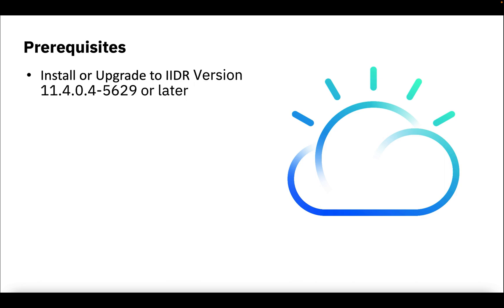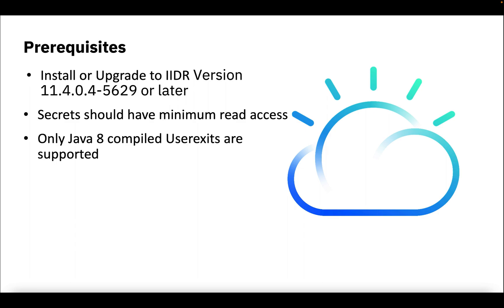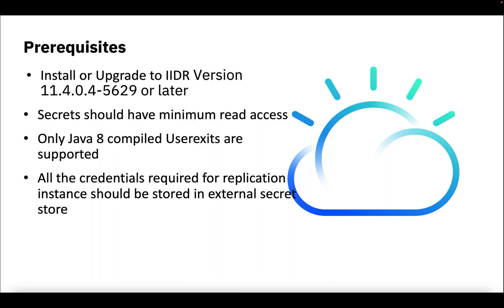Let's start with some key requirements. The user has to be on IIDR version 11.4.0.4.5629 or later to configure the Secret Manager User Exit feature. The secrets stored in Secret Manager must have a minimum of read access. The user should create a Java-based CDC User Exit following the documentation, or use a sample User Exit provided in the CDC Installation Directory Samples folder. Only User Exit will be responsible to retrieve secrets, and only User Exits compiled with Java 8 are supported. All credentials required for creating a replication instance should be added to the Secret Manager application, and the keys to the secrets should be provided during instance creation.